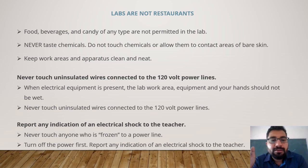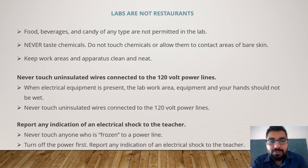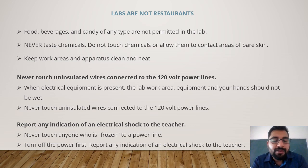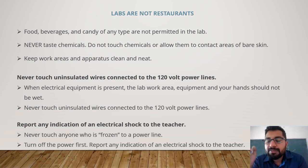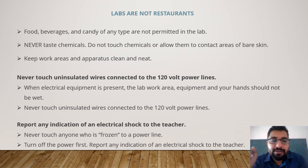Never touch uninsulated wire connected to the 120-volt power line. If there is no earthing provided to an instrument, do not use it. 120-volt power line voltage is very high and can cause shock. When electrical equipment is present, the lab work area, equipment, and your hands should not be wet. Wet hands touching an instrument will cause electric shock.